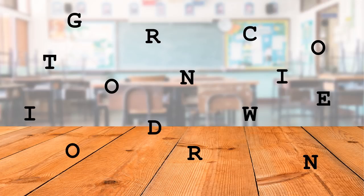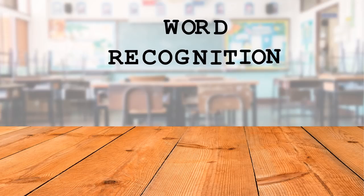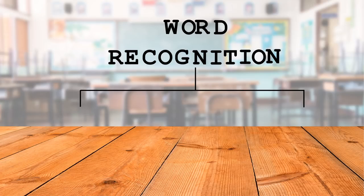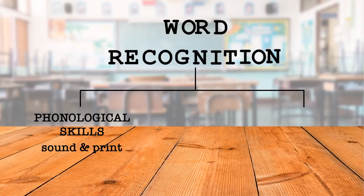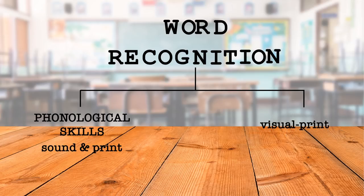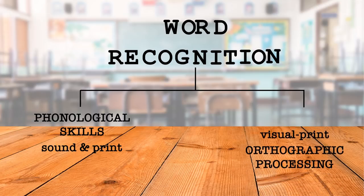Children begin by learning the basic visual symbols in their language. They must then understand how these visual symbols come together to form words. Learning to read words on a page is called word recognition. There are two levels to this kind of understanding. On one level, children can use their phonological skills to make connections between sound and print. On another level, children develop the sense of how a word should be written. This ability to recognize words visually, or using visual print information, is called orthographic processing.